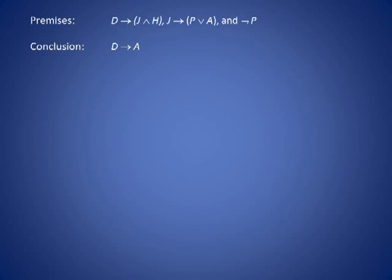So, suppose we do have the premise D. We see from the first premise that we would be able to conclude J and H. In particular, then we would have J. But then, from the second premise, J implies P or A, we would have P or A. And finally, from the last premise, not P, we would have A.